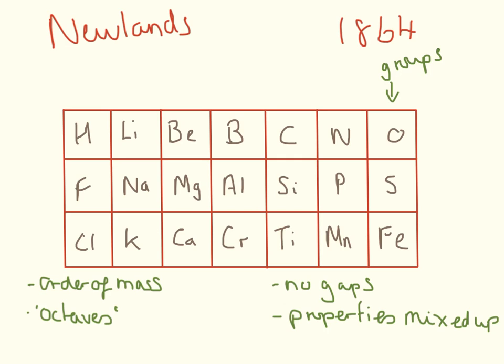So in about 1864, Newlands came up with his version of the periodic table. These were the known elements of the time, and he arranged them into groups going down, and he presented this.